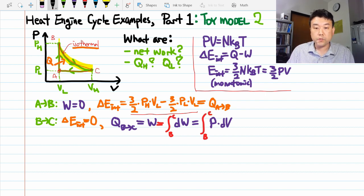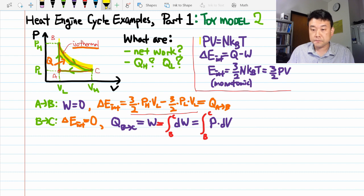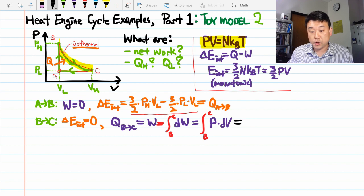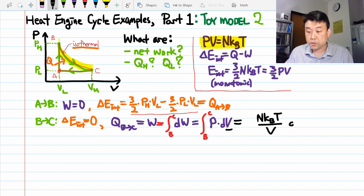So this is where we use the ideal gas law to express the pressure here in terms of volume, the integration variable, and other things that are hopefully constant. Now, because it's an isothermal process, the temperature here is constant.